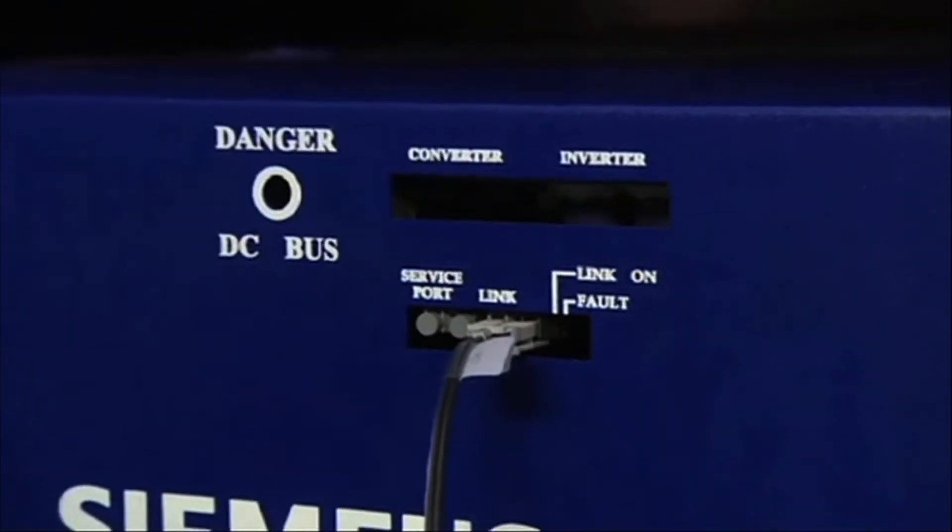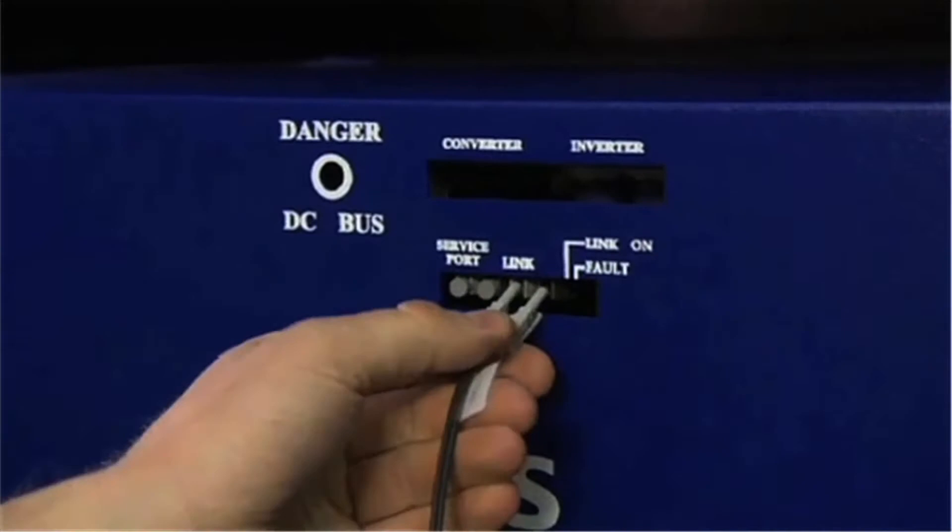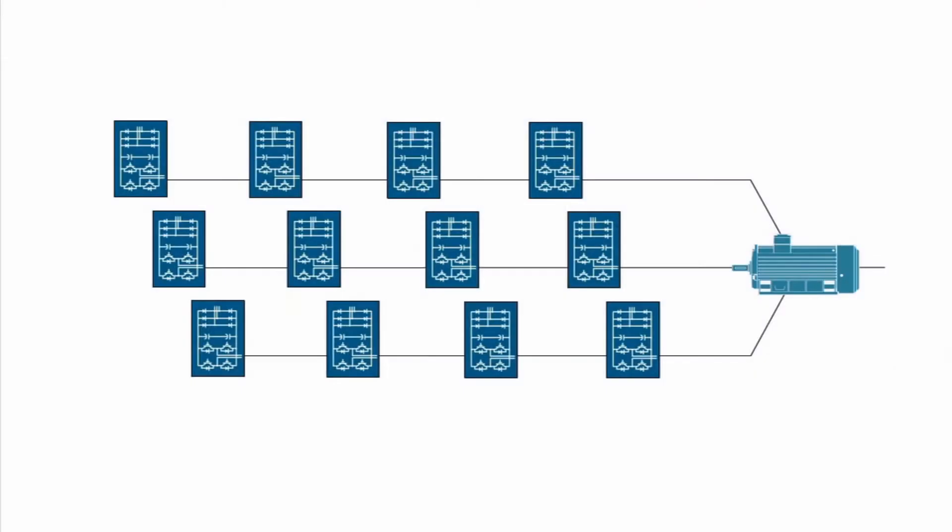A cell fault can be induced by removing the fiber optic cable connection from the main controller. With the fiber optic cable removed, the drive identifies the failed cell as the cell that can no longer communicate. The system reconfigures the power section and places the failed power cell in cell bypass. The system continues to operate normally.